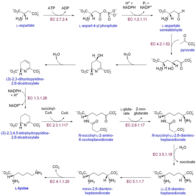Like phospholipids, sphingolipids have a polar head and nonpolar tails. Unlike phospholipids, sphingolipids have a sphingosine backbone. Sphingolipids exist in eukaryotic cells and are particularly abundant in the central nervous system. For example, sphingomyelin is part of the myelin sheath of nerve fibers. Sphingolipids are formed from ceramides that consist of a fatty acid chain attached to the amino group of a sphingosine backbone. These ceramides are synthesized from the acylation of sphingosine.